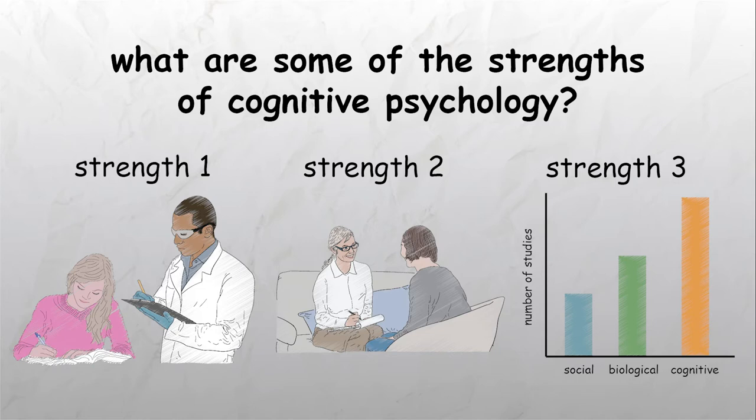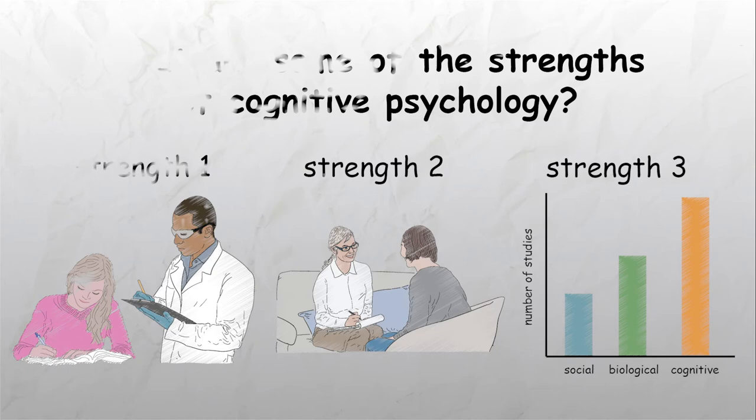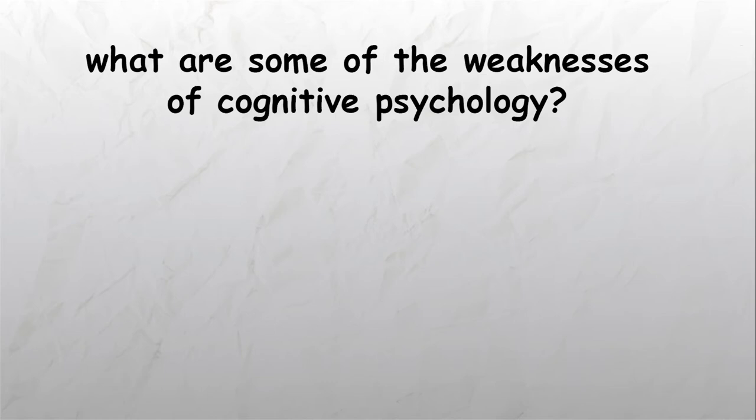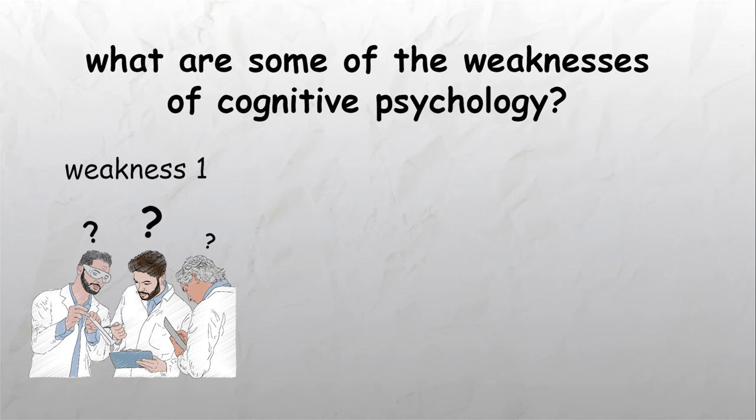The cognitive approach nowadays is often called cognitive science and is able to provide a very sophisticated understanding of how the brain processes information. A weakness of the cognitive approach relates to the validity of measuring cognitive processes. We can only infer what a person is thinking, and therefore the cognitive approach relies heavily on self-report measures and observation.